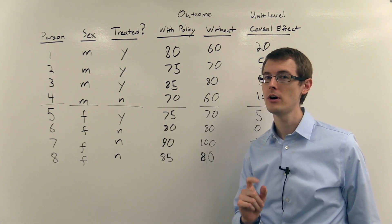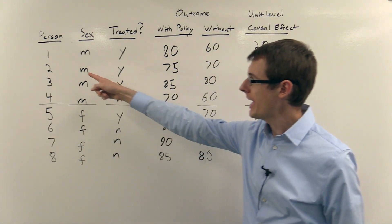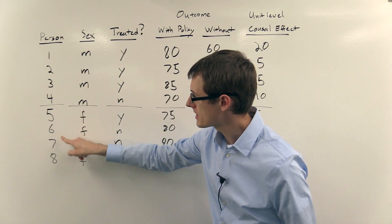Here I'm going to introduce a new kind of average effect. To do that I've got a table with eight data points. I've got eight people, one through eight.